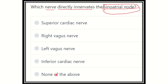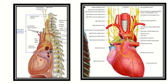We have to find out the nerve which supplies the sinoatrial node. In this picture, we can see the heart, the right atrium, and the left atrium. We know the SA node is located in the right atrium. We can see different nerves here — they are actually branches of the vagus nerve. In this second picture, we can also see the heart, the left atrium, and the SA node located at this place.